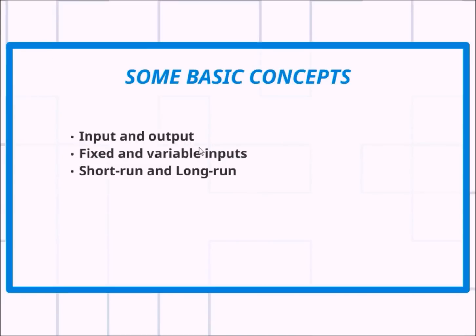The first concept is input and output. Input is basically any good or service that goes into the production process — for example, raw material and labor. Input is simply anything which the firm buys for use in its production or other processes. Output is any good or service that comes out of the production process — that is the final product or final service which we provide to the end consumer.